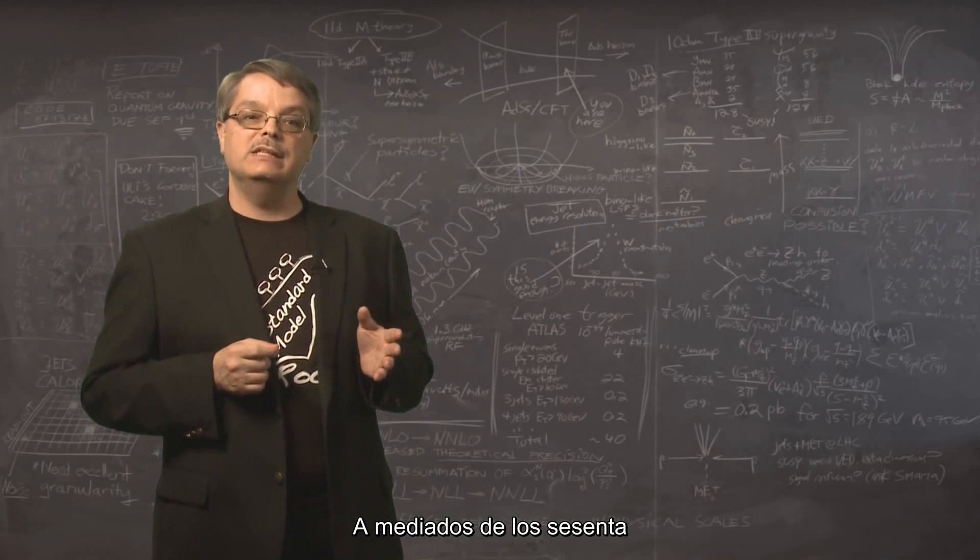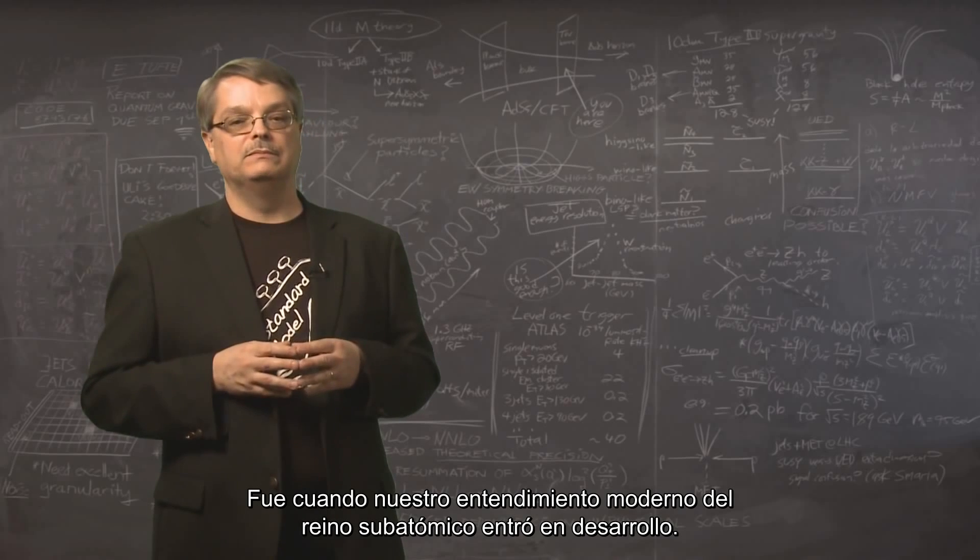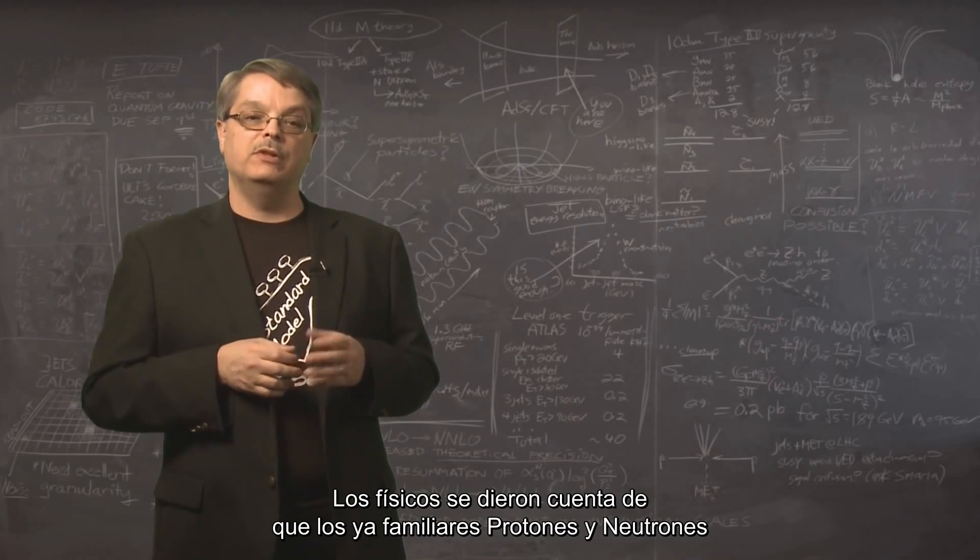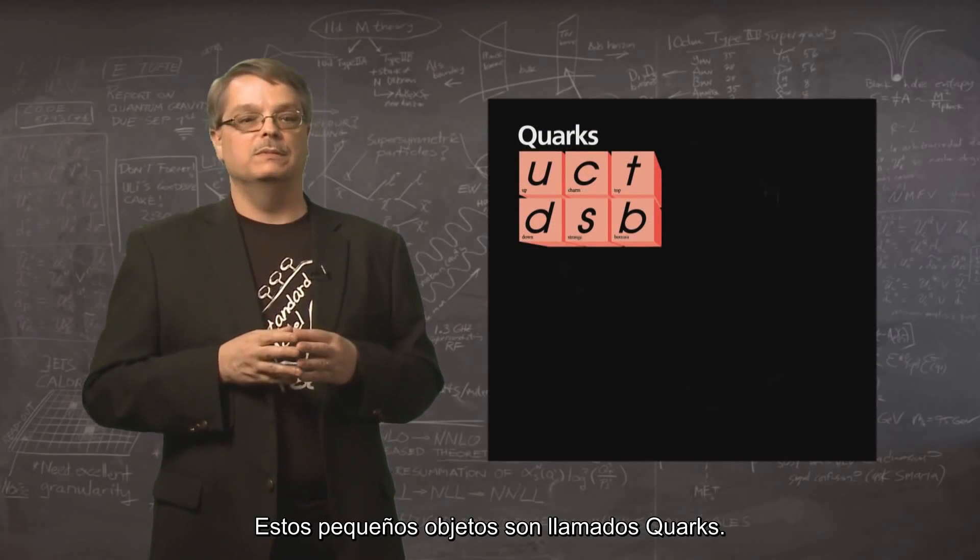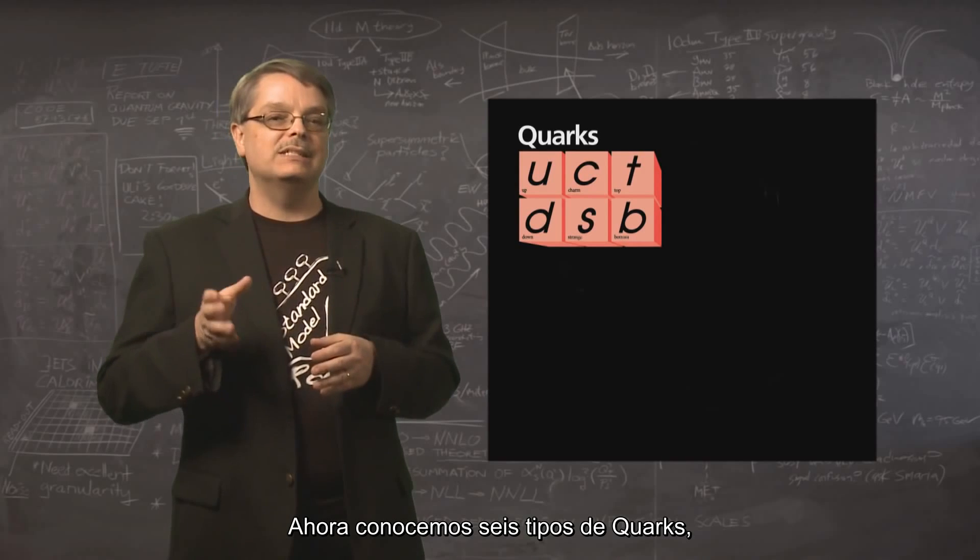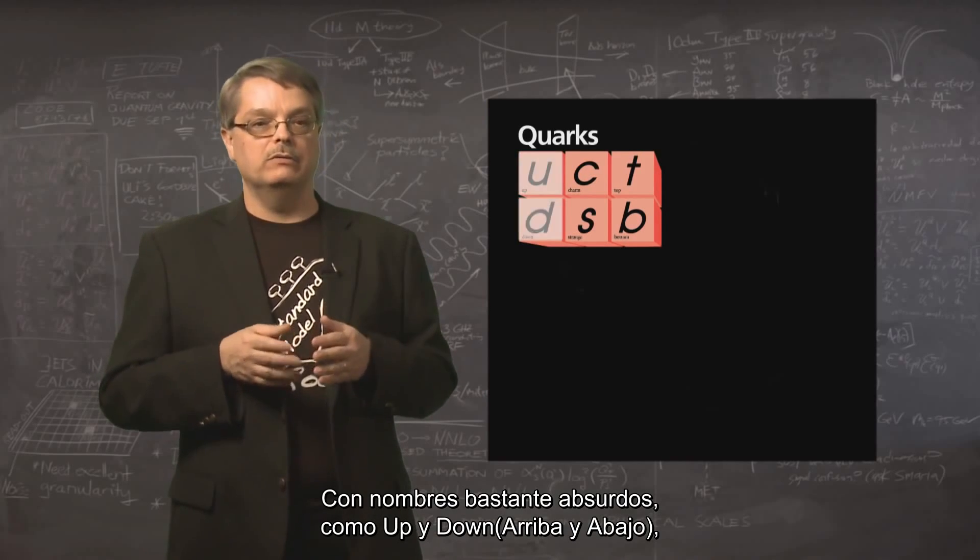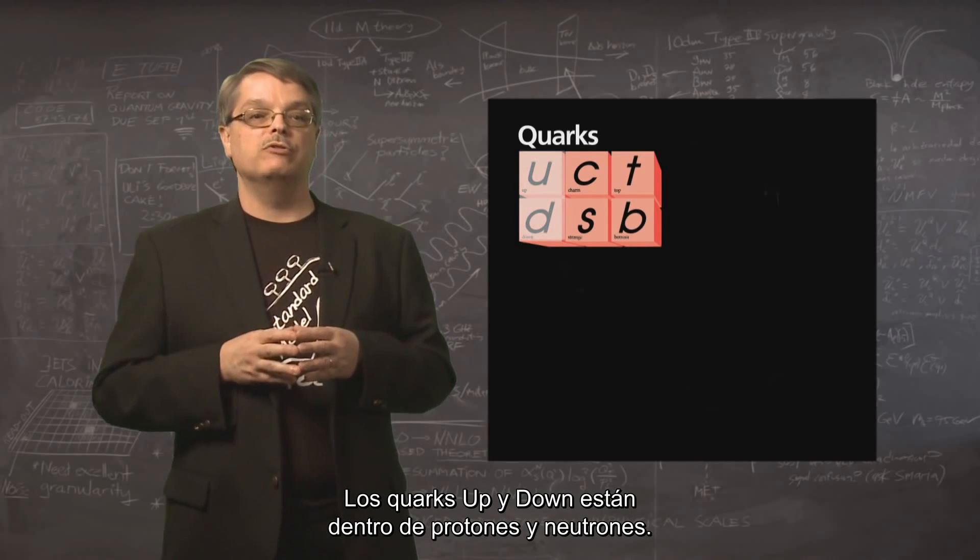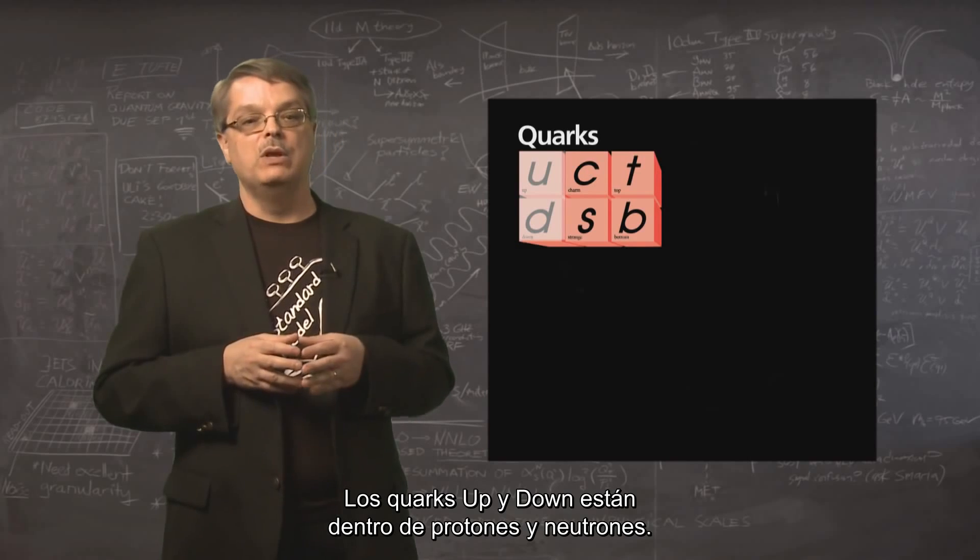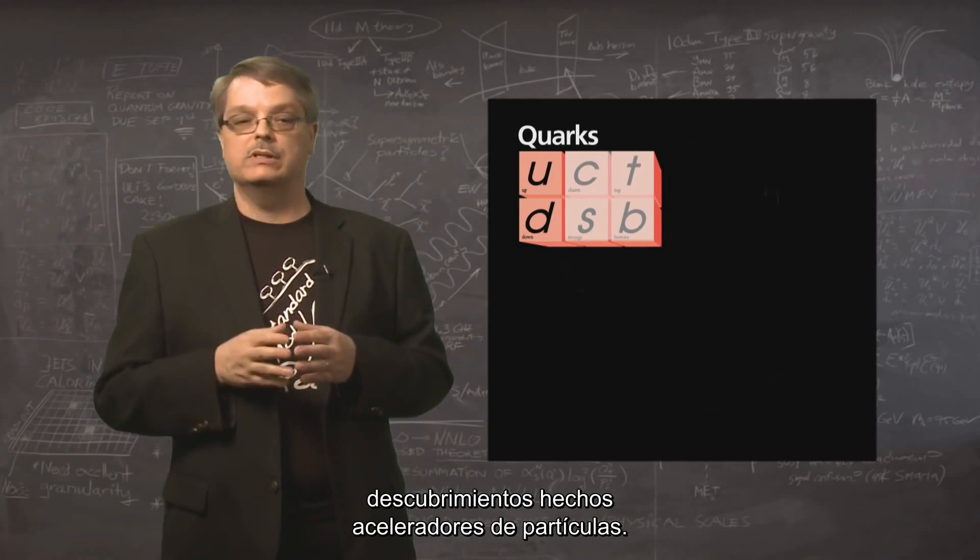The mid-1960s was when our modern understanding of the subatomic realm began to develop. Physicists realized that the familiar proton and neutron were made of smaller objects still. These smaller objects are called quarks. We now know of six types of quarks. They have kind of silly names, which are up, down, charm, strange, and top and bottom. Up and down quarks are found inside the proton and neutron, while the others are necessary to explain the vast number of discoveries made in particle accelerators.